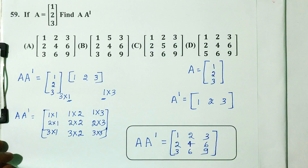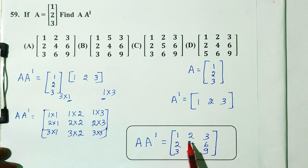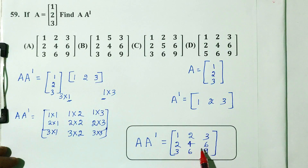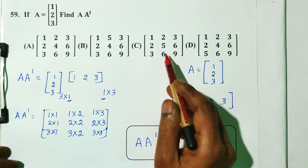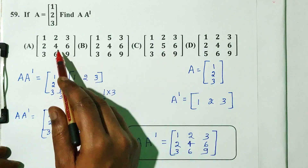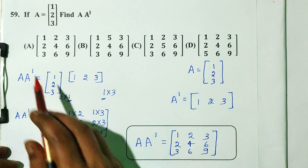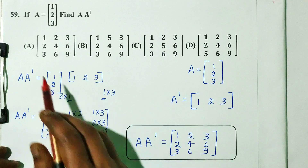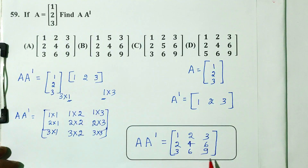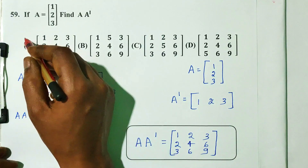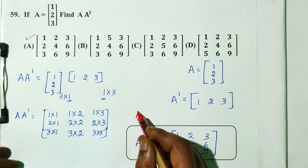So A times A-dash equals the 3 by 3 matrix: 1, 2, 3, 2, 4, 6, 3, 6, 9.